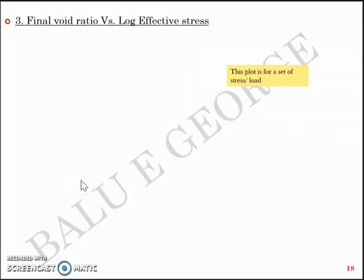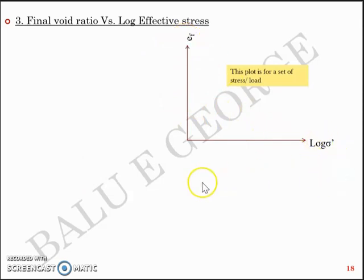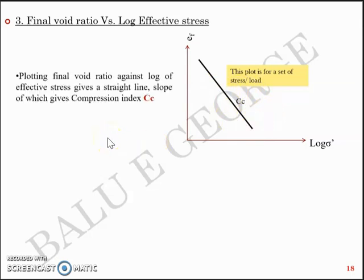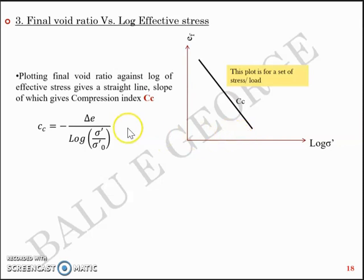The fourth observation is the final void ratio versus the logarithm of effective stress. In the previous graph the plot was between σ' and EF; here you have log σ' on the x-axis and EF on the y-axis. Once you take the logarithm, the previously curved graph becomes a straight line. This plot is for a set of loads or stresses. The straight line has a constant slope called the compression index Cc. So plotting final void ratio versus the logarithm of effective stress gives a straight line, the slope of which is Cc = −ΔE / log(σ'_final / σ'_initial).